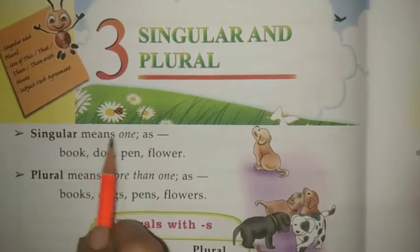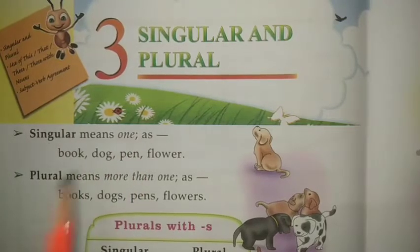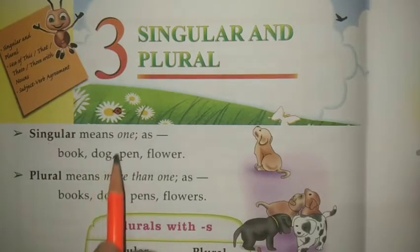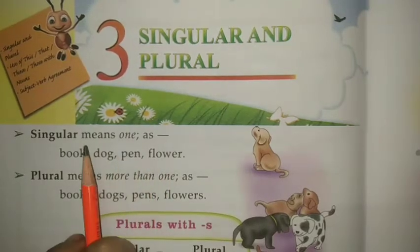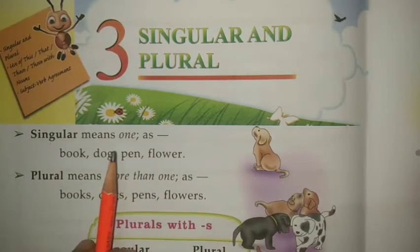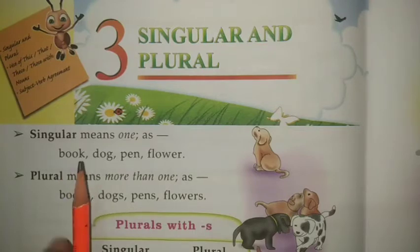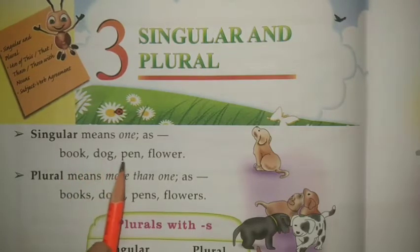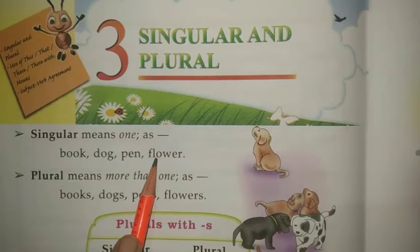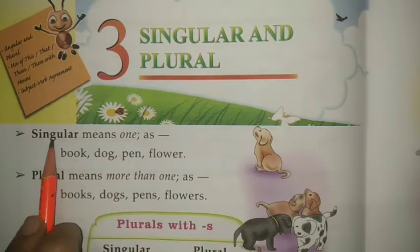Singular means one. Examples: book, dog, pen, flower. These are called singular — they refer to just one thing.